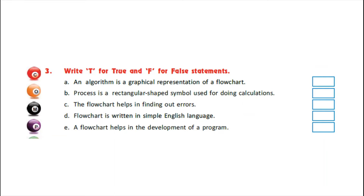Exercise 3: True or False. A) An algorithm is a graphical representation of a flowchart — False, this is an incorrect statement. So write F in the box in front of the first statement. B) Process is a rectangular shaped symbol used for doing calculations — Correct. So write T for true.